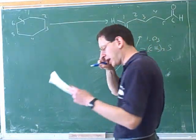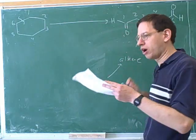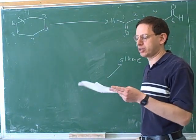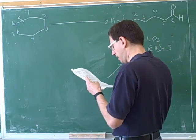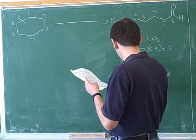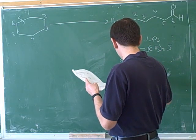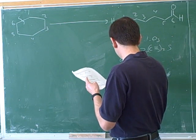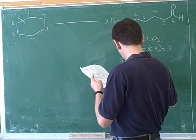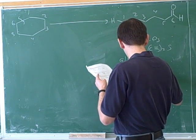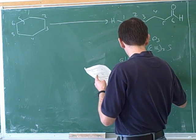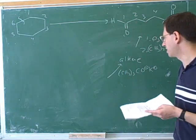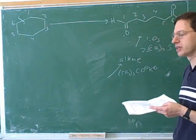You thought of doing that with a strong, bulky base. So what type of reaction are you thinking of using there? E2. Yeah, that's a really good way to make something into an alkyne. And you're right, this is the best reagent of the ones they gave us — a strong, bulky base for doing that.